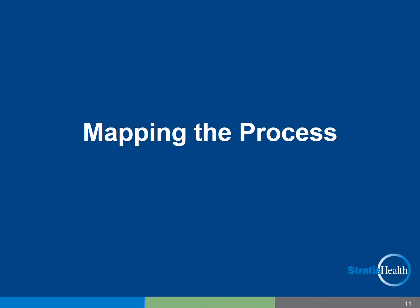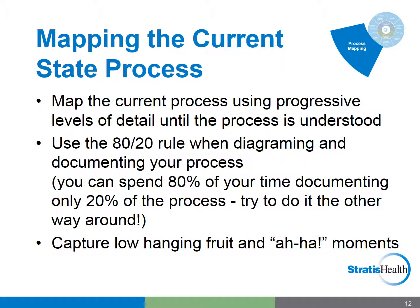Mapping the process. As we start to create the as-is or current state process diagram, it's helpful to think about how much detail is required. This will vary for each process you diagram, but base the number of steps and detail on the need to understand the process. You don't want to get to the point of creating work instructions for each step. A work instruction describes each action that is taken — for example, your EHR vendor or IT department provides a guide on how to reset a password with each click of the mouse and each key we need to press. The 80-20 rule is a good approach: create a diagram that is useful for discussion using 20% of your time, which approximates how the process steps are carried out. You can capture the low-hanging fruit or essential steps of the process and always add more detail later.